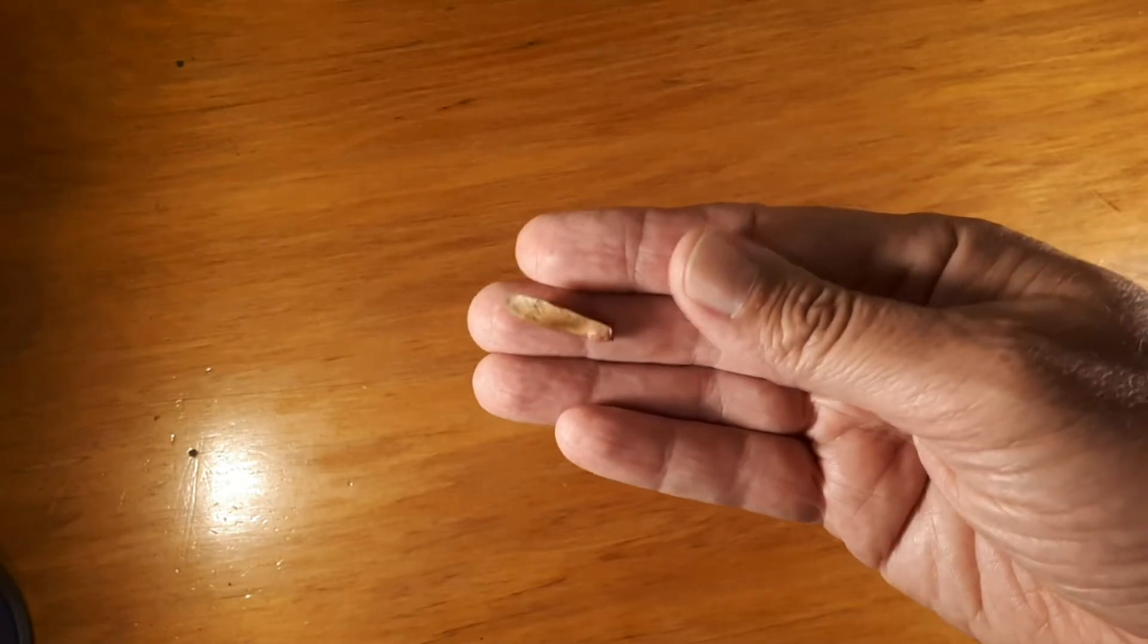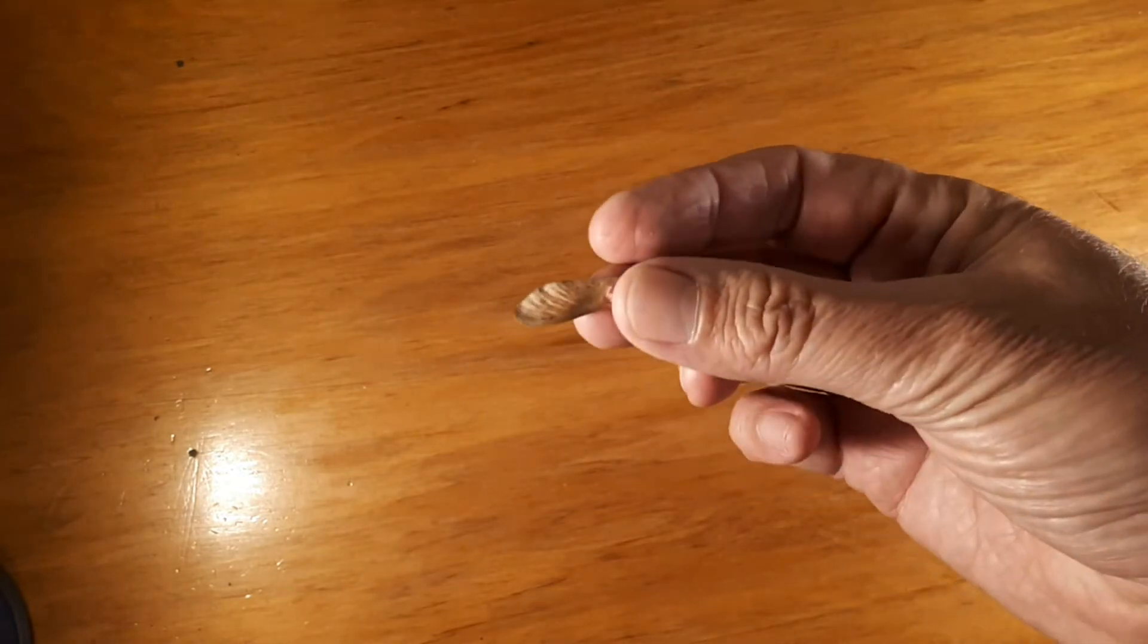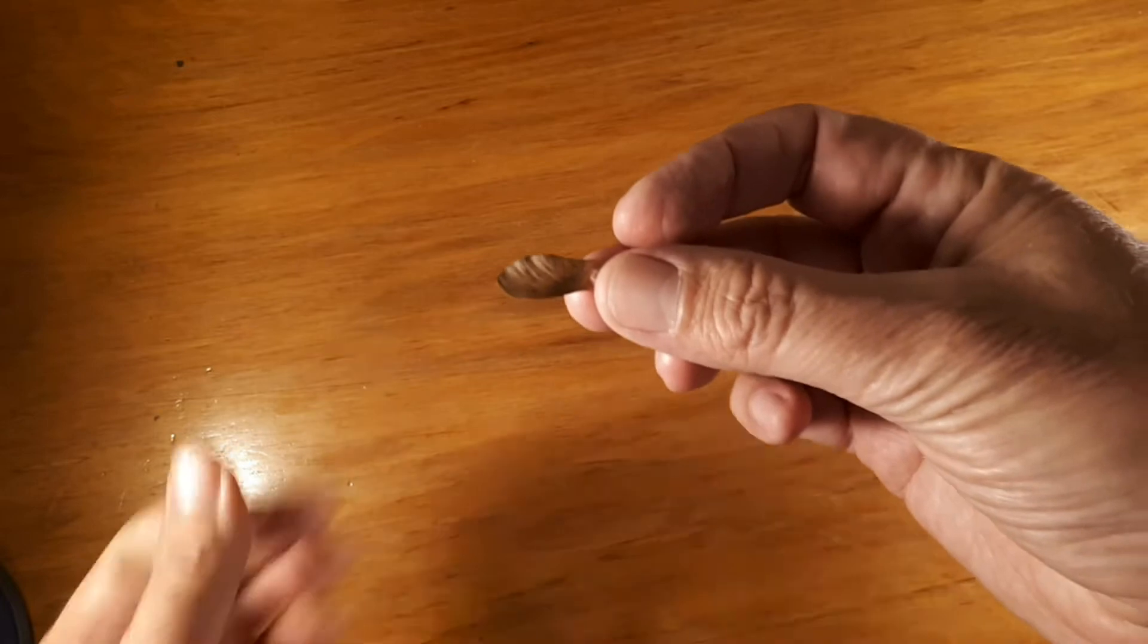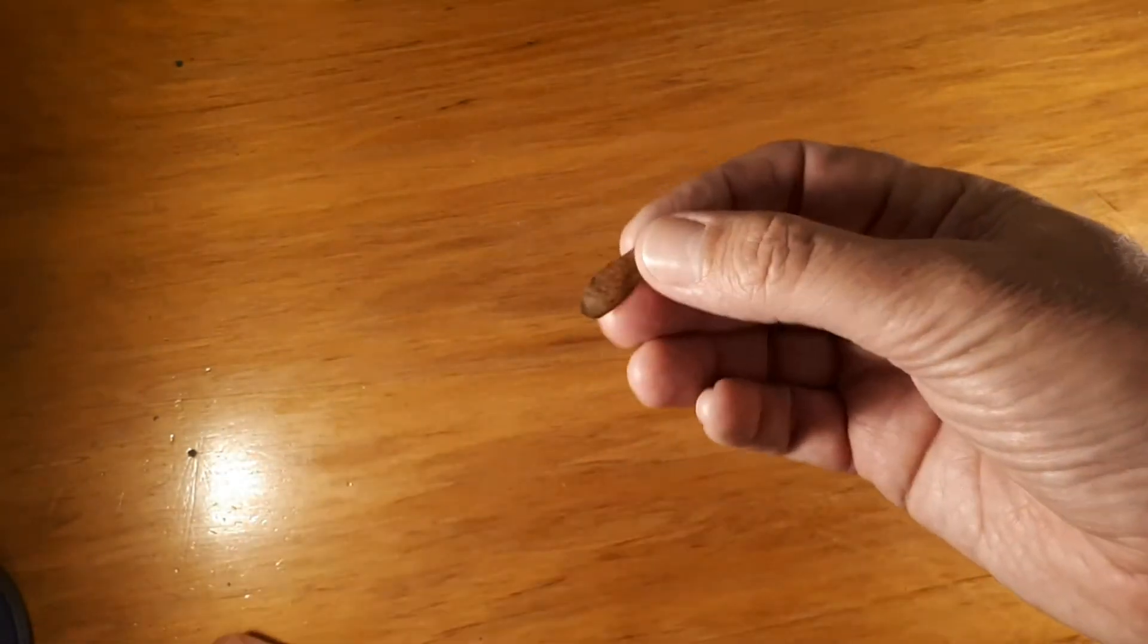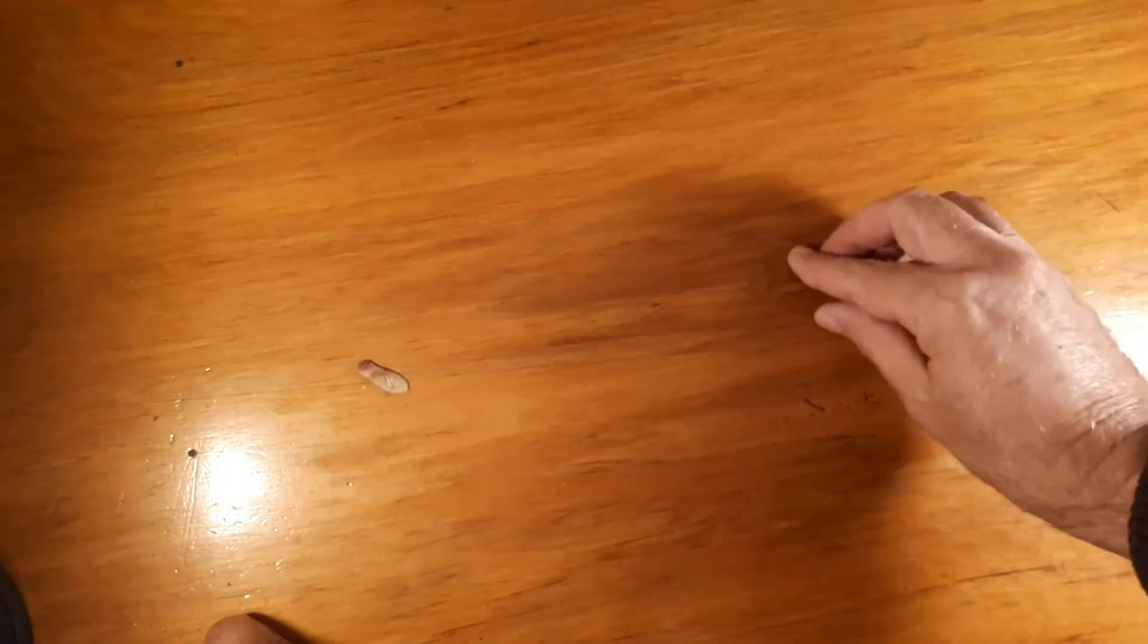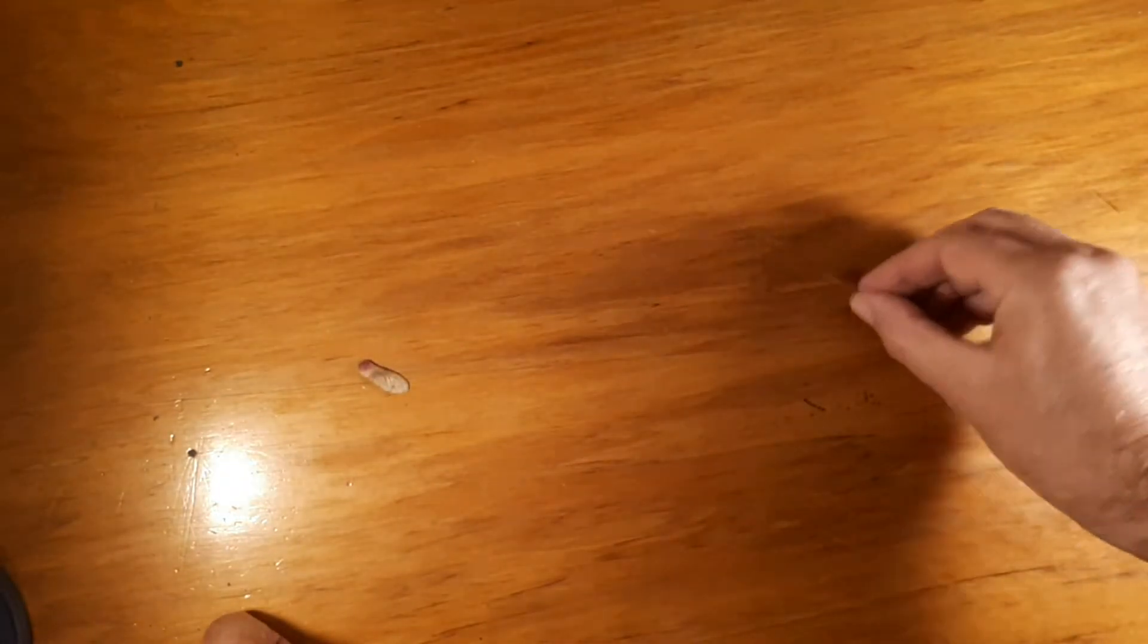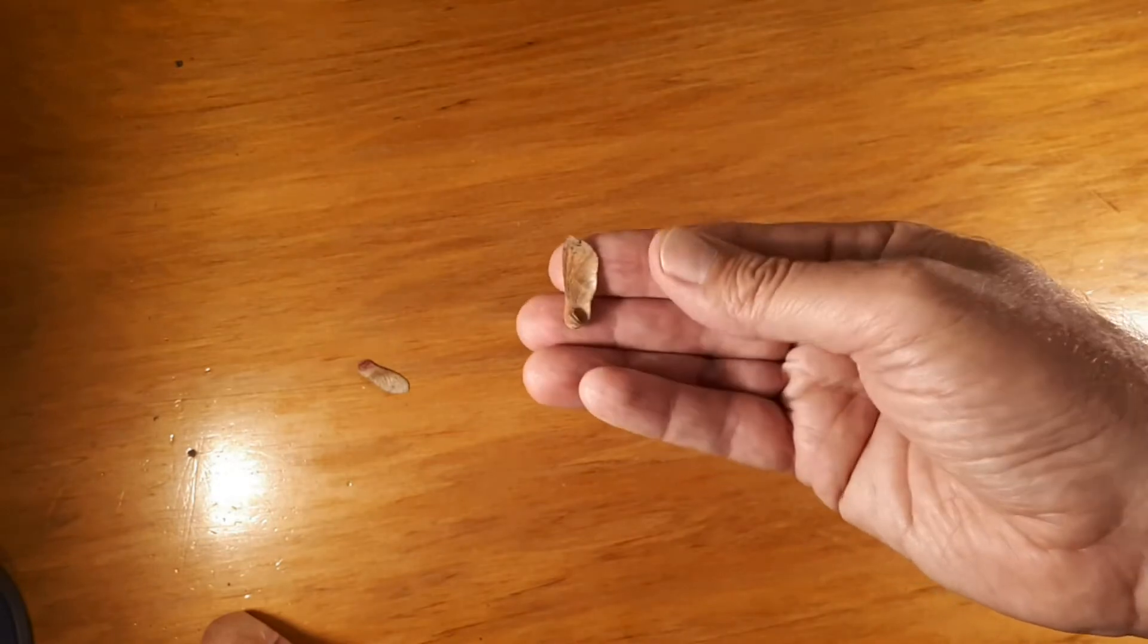These are some seeds from a plane tree and what they have is the ability to slow themselves down as they fall from the tree. They spin as they fly. There may not be enough room to show it here, but they're quite amazing things, they have a wing built into the seed.